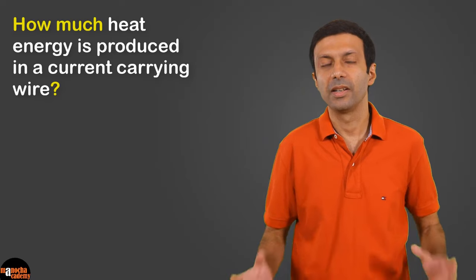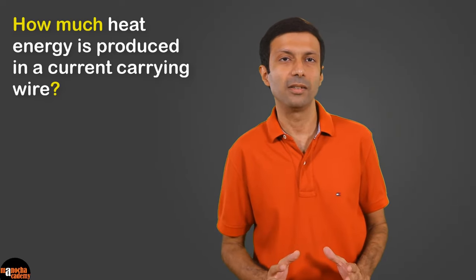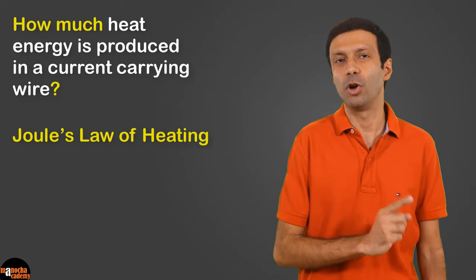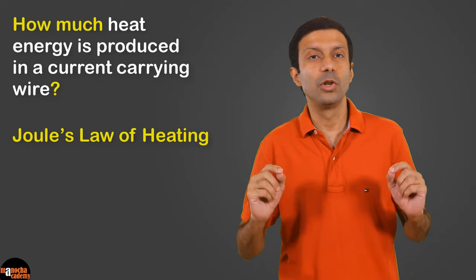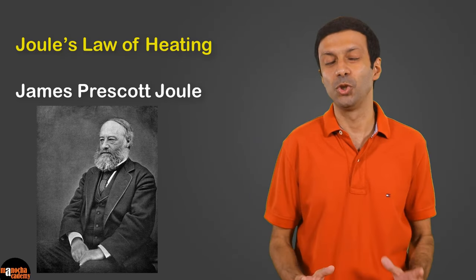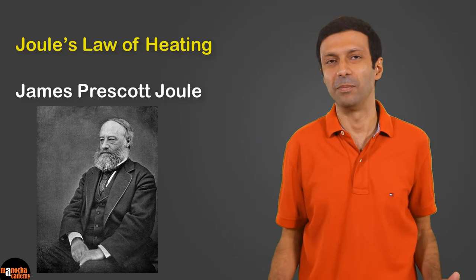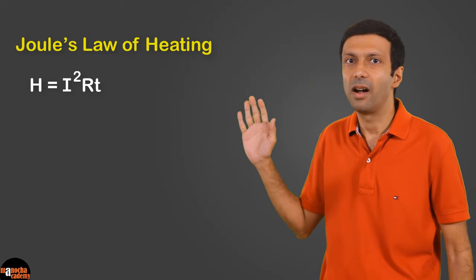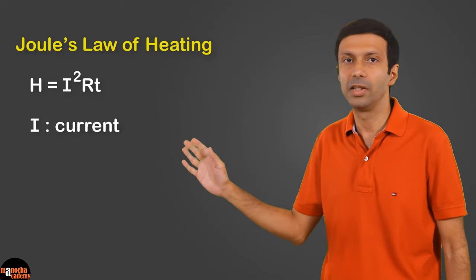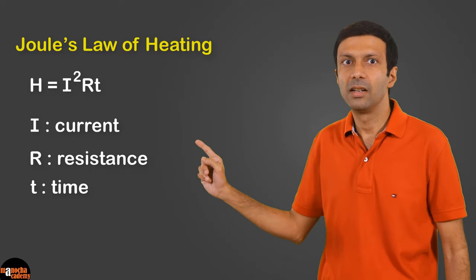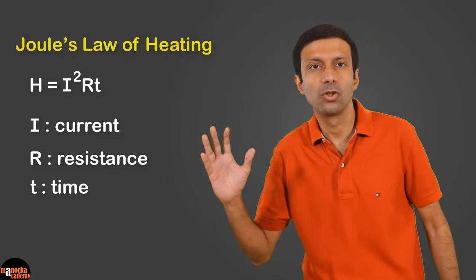Do you know how much heat energy is produced in a current-carrying wire? What factors does it depend on? These questions are answered by Joule's law of heating, proposed by James Prescott Joule. The SI unit of energy, Joule, is also named after him. According to Joule's law of heating, the heat energy produced H is equal to I²RT, where I is the current in the wire, R is the resistance of the wire, and T is the time for which the current is passed through the wire.